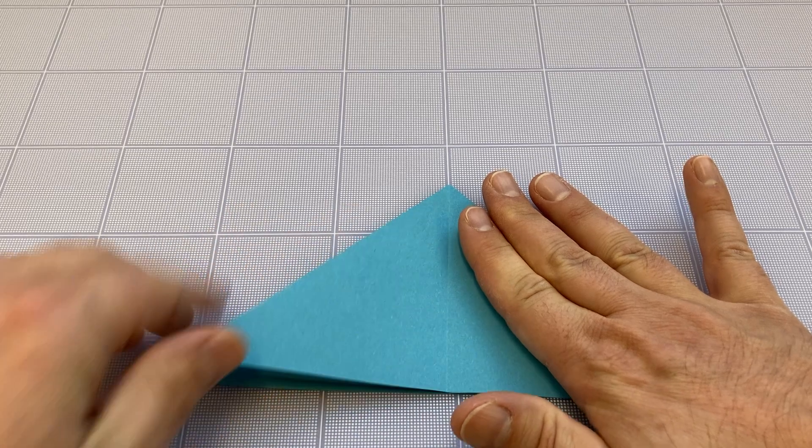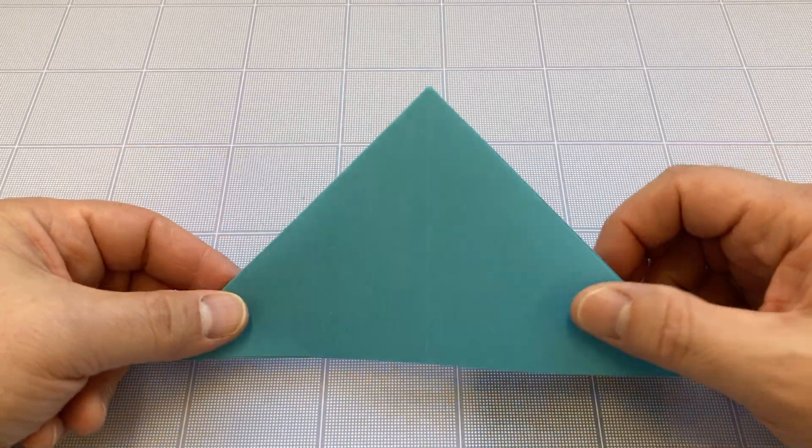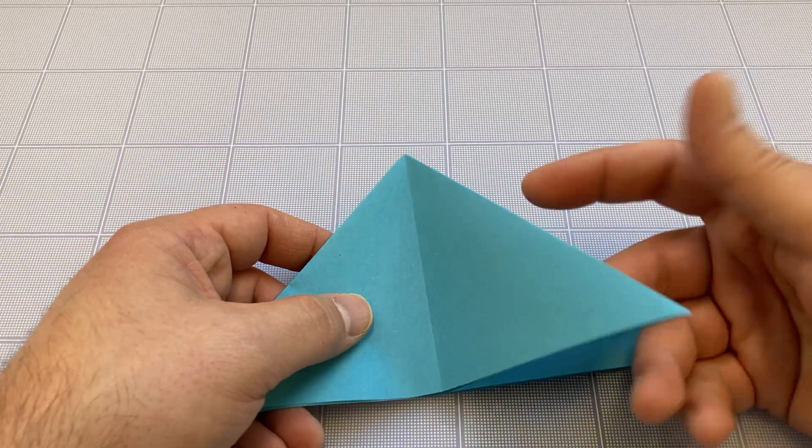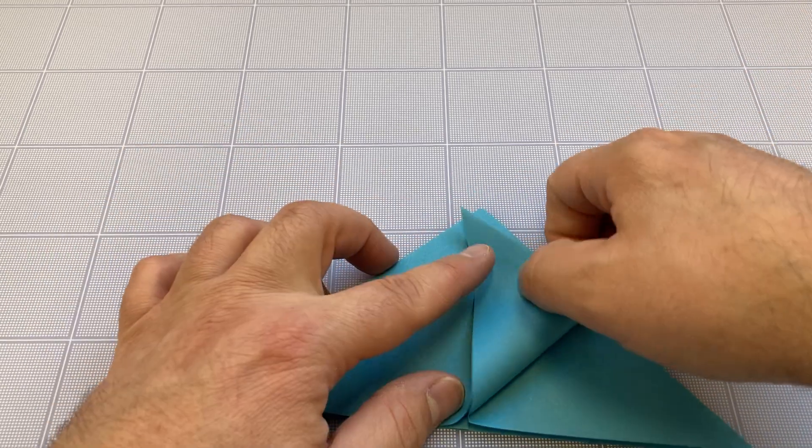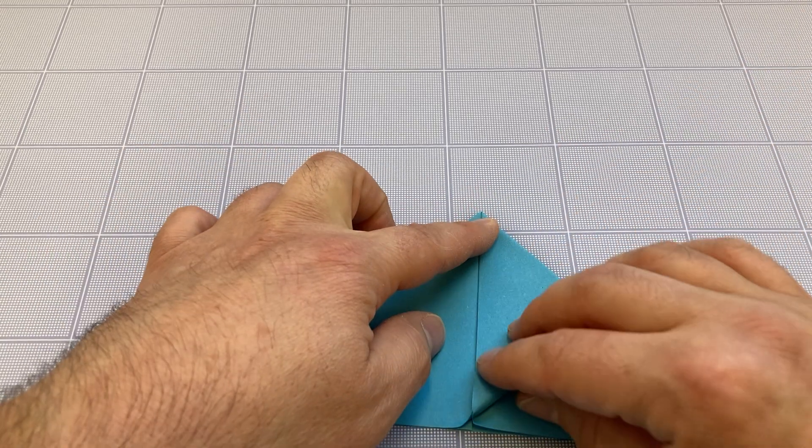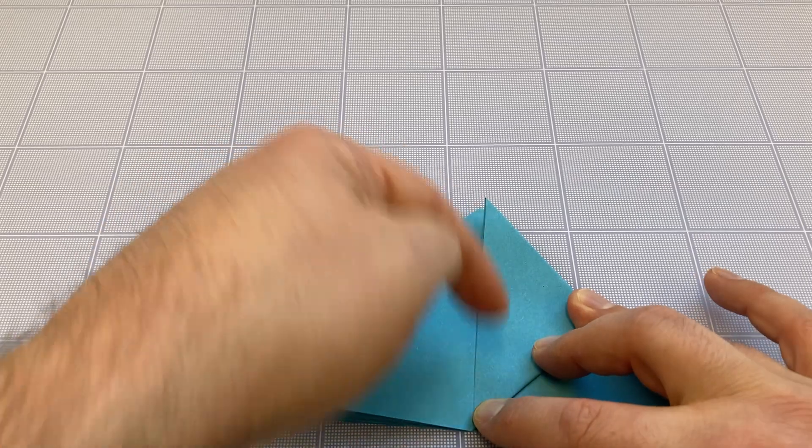This is what's called the water bomb base, but we're going to make a butterfly. Take one of these flaps and fold it up to this top peak here along the center line.